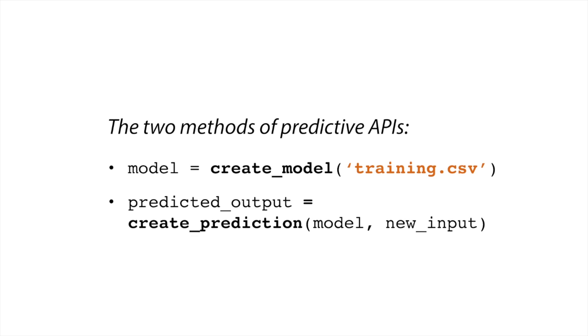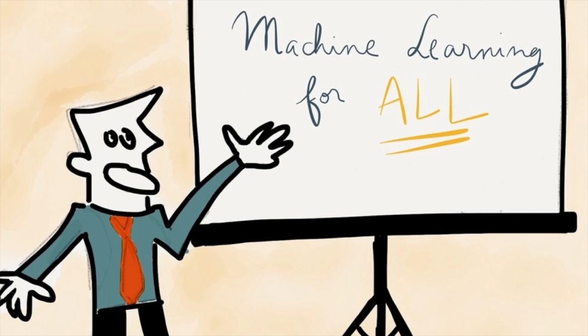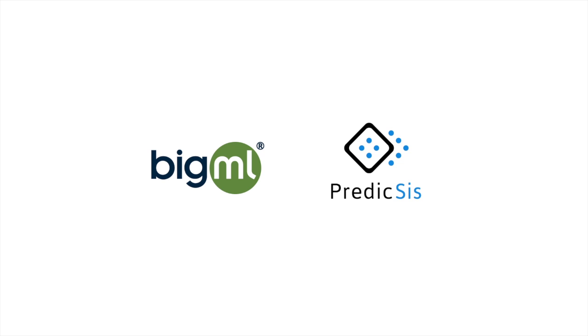Democratizing machine learning. Today we have two companies with APIs that allow you to do this — I really encourage you to go talk to them. They're very easy to use. The two companies are BigML and PredictSys.